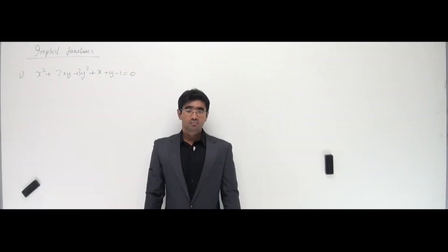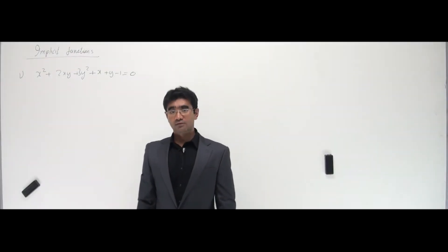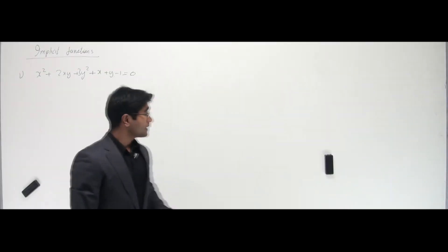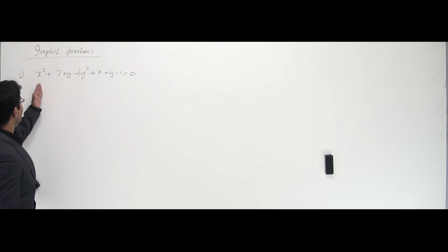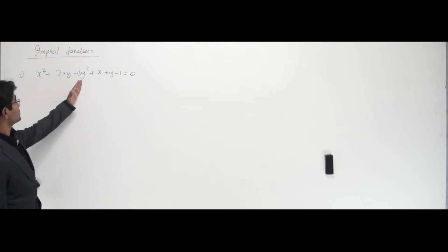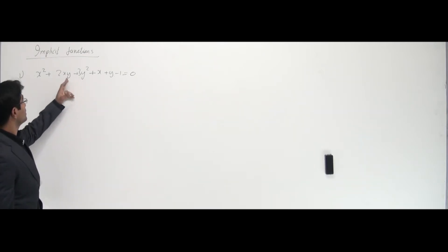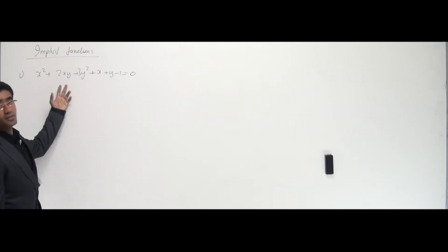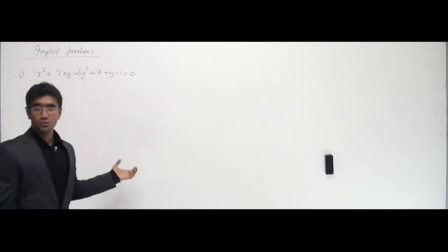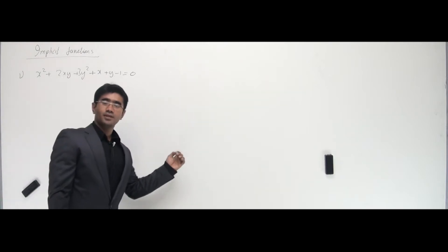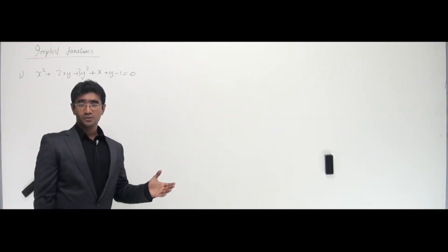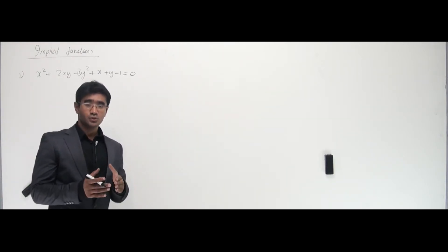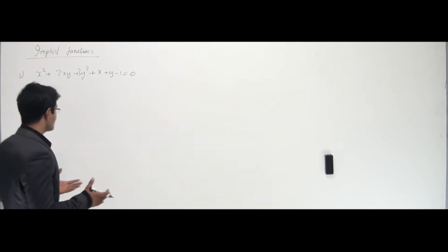Let's continue working problems on implicit functions. I can see that x squared and y squared are here, and x and y are mixed up basically with the product rule. These kinds of functions are called implicit functions.